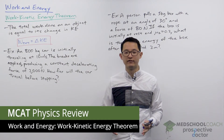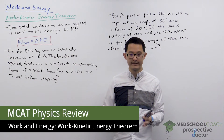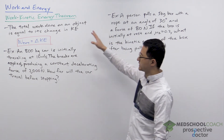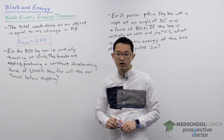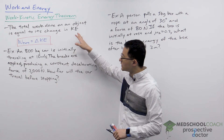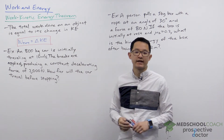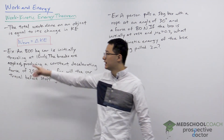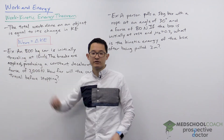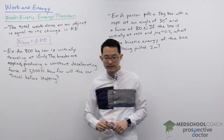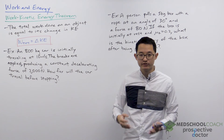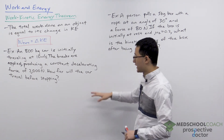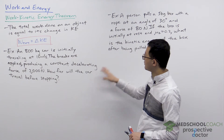In this video we're going to go over the work-kinetic energy theorem. The work-kinetic energy theorem states that the total work done on an object is equal to the change in kinetic energy of that object. In equation form, total work equals the change in kinetic energy. This theorem is useful for solving a variety of different types of problems. We'll take a look at how it works with a couple of examples.